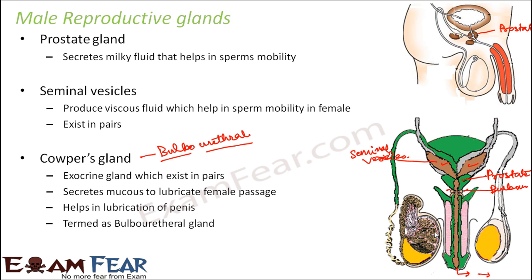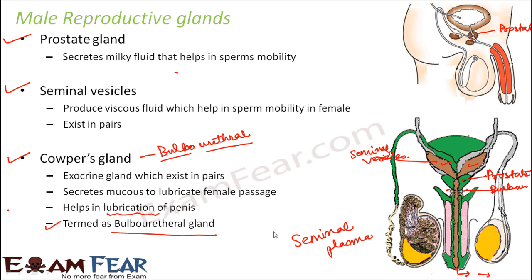It secretes a slimy substance like mucus, which allows the penis to slip along the surface of the female passage. Lubrication is its main function. Overall, all three glands give secretions, and together those secretions form a fluid called the seminal plasma. This seminal plasma is rich in fructose, calcium, and some enzymes. So the fluid which comes out of the penis through the urethra does not contain sperm alone — it also contains secretions from all these glands, including calcium, fructose, and enzymes.